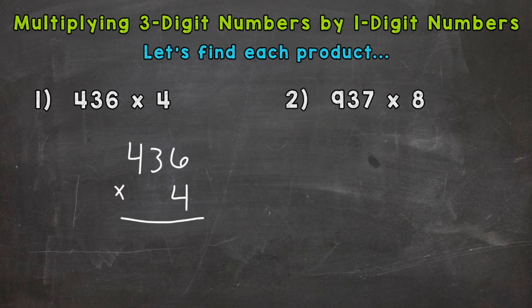So we can do 4 times 6, 4 times 3, and 4 times 4. So we'll start with 4 times 6 which is 24. So we write our 4 here and we carry our 2 to the tens place.